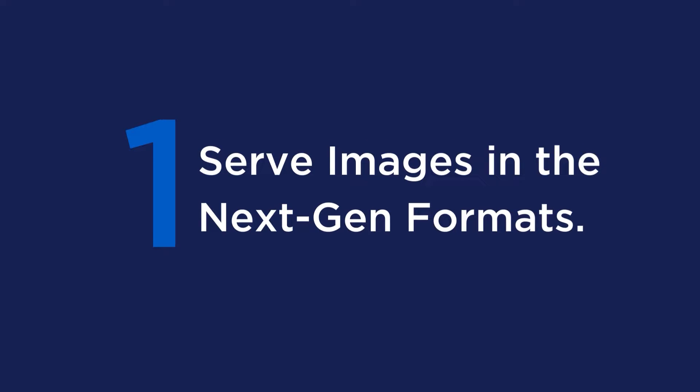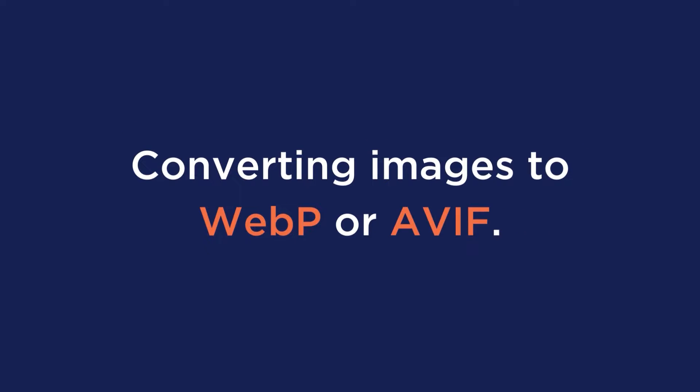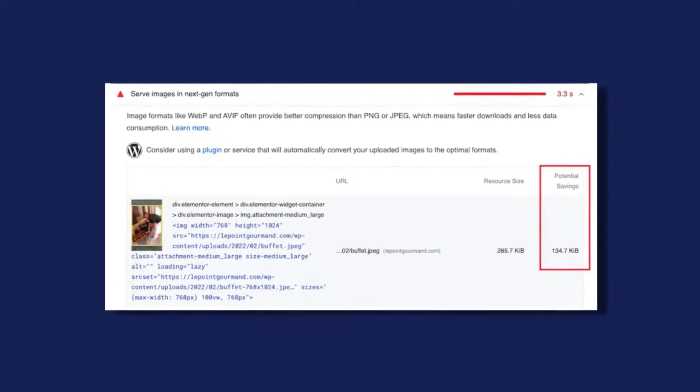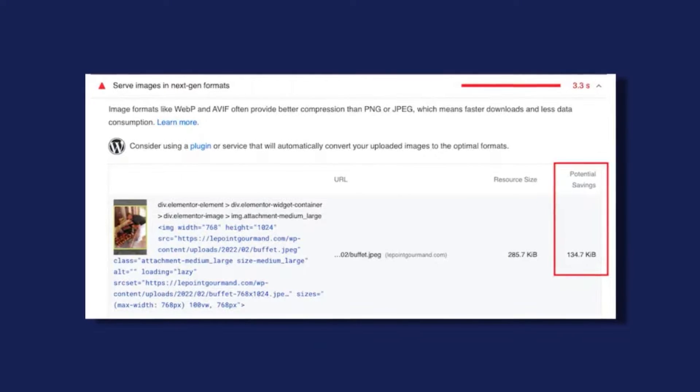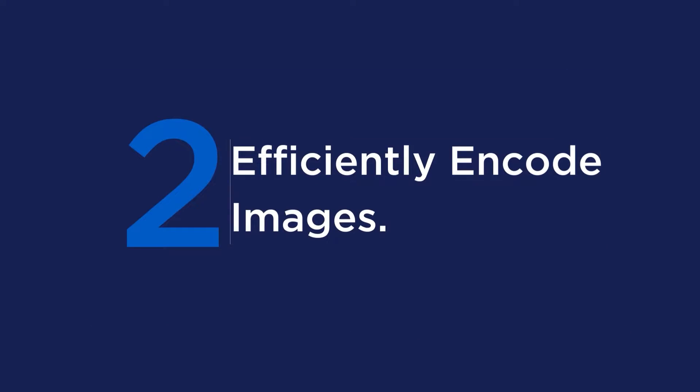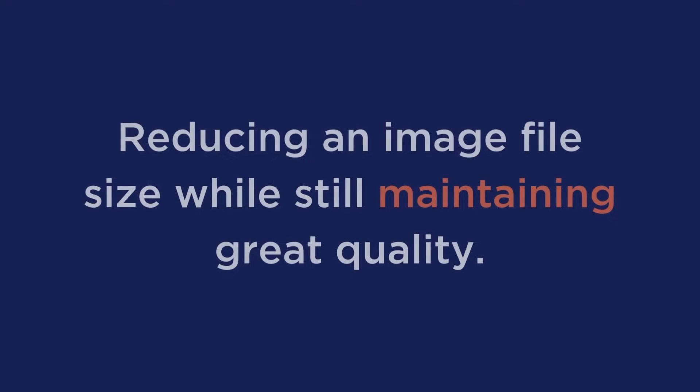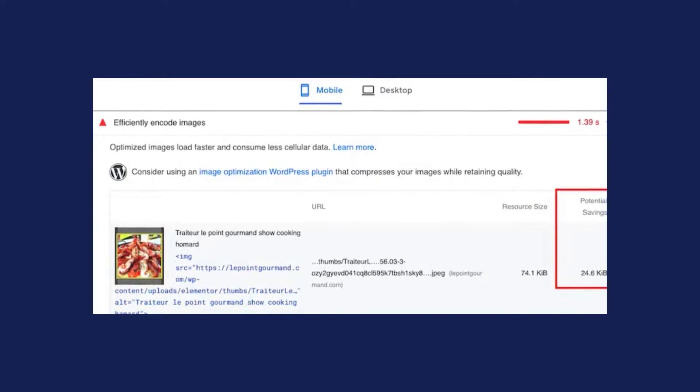Let's go over the page speed recommendations related to images. Number one is to serve images in next-gen formats. Google recommends converting images to WebP or AVIF because those formats offer better compression than JPEG or PNG — meaning faster downloads, less data consumption, and an overall faster site. In this example, I could save almost 135 kilobytes by converting a JPEG image to WebP. Number two is to efficiently encode images, meaning reducing file size while maintaining great quality. Google will flag images if the potential savings are four kilobytes or greater.